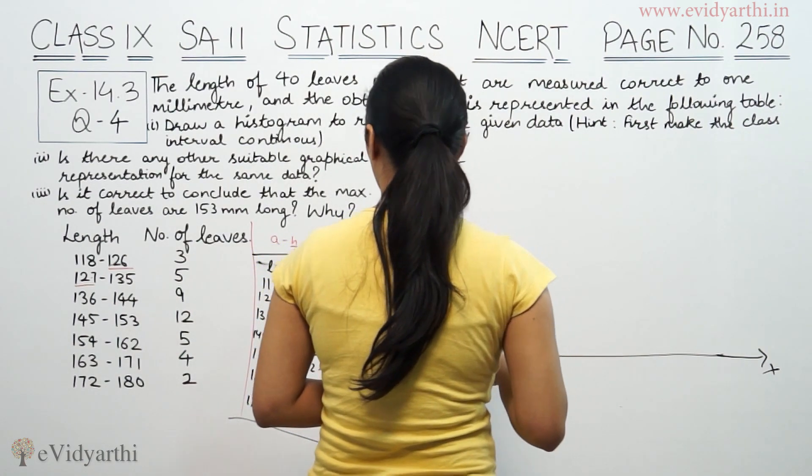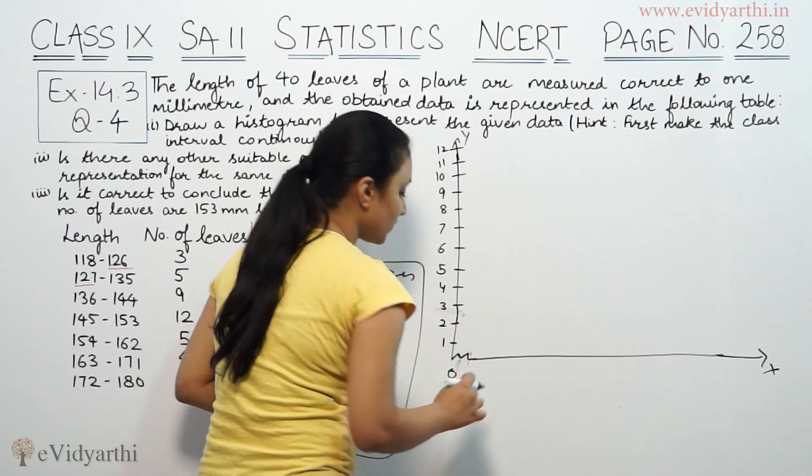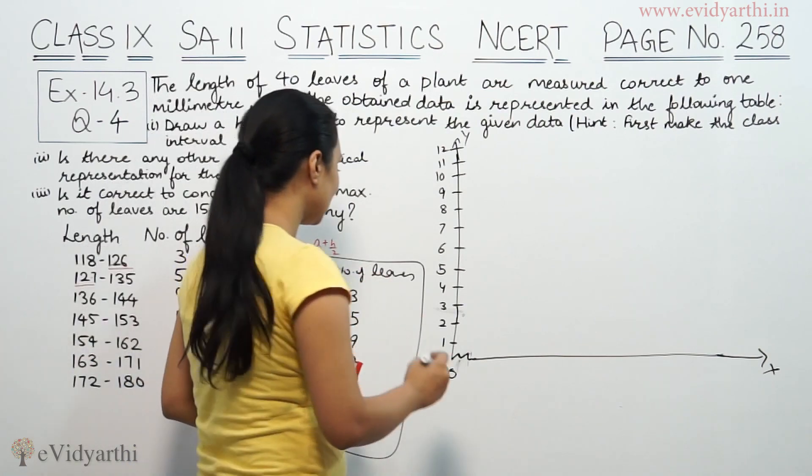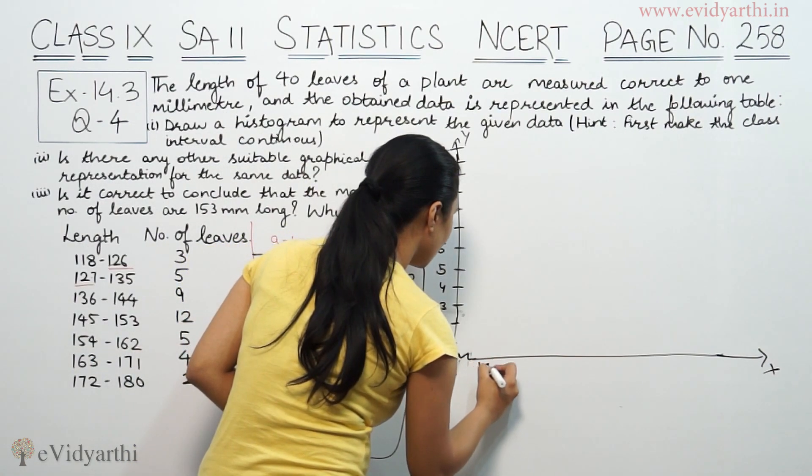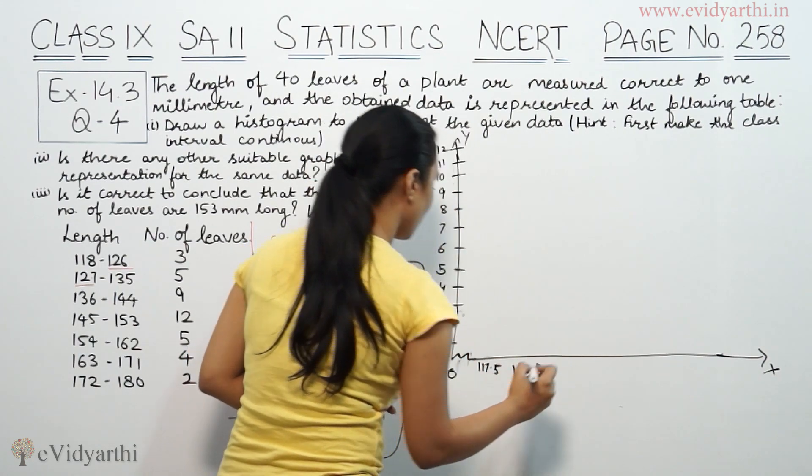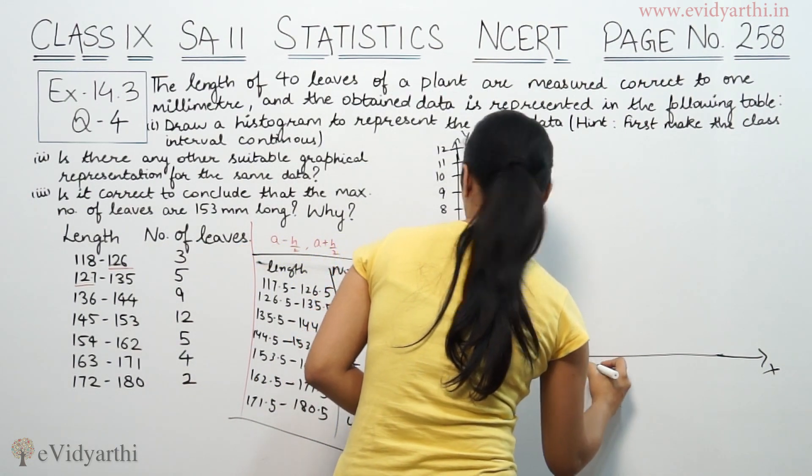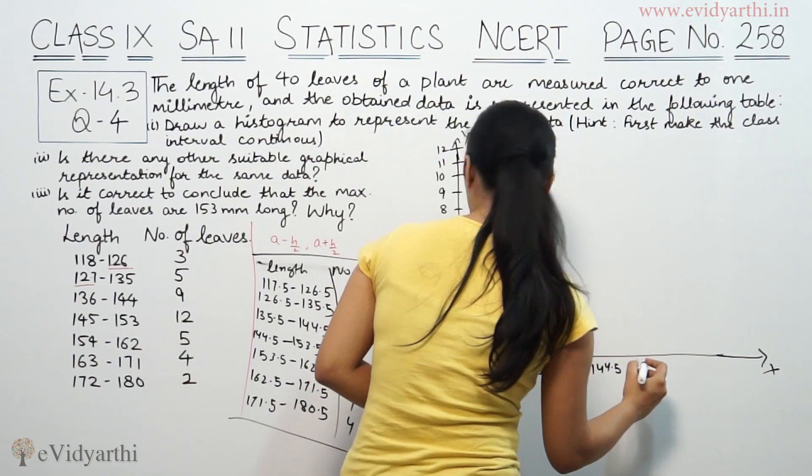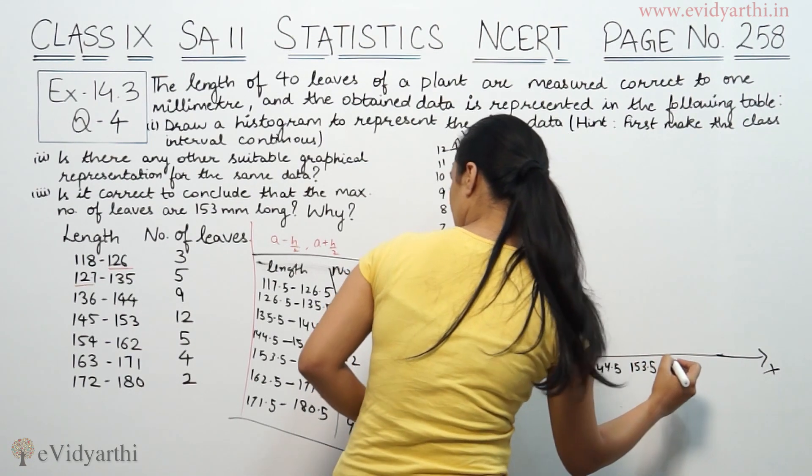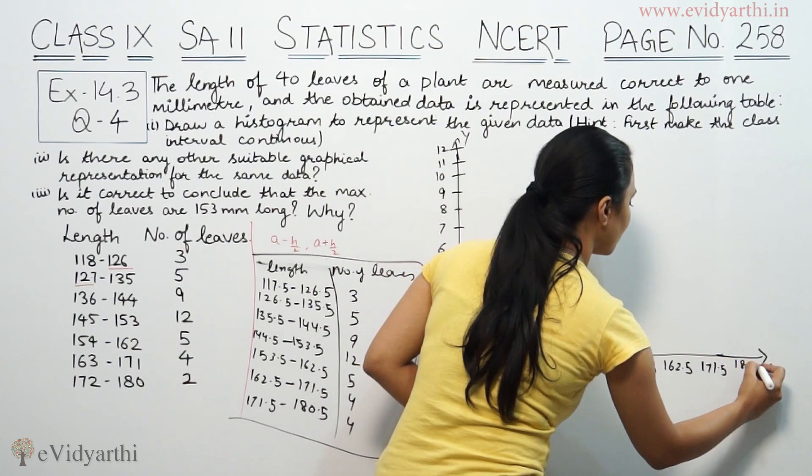Then 117.5 to 126.5. We write the class intervals on the axis. This is 117.5, then 126.5, then 135.5, 144.5, 153.5, 162.5, 171.5, and then 180.5.